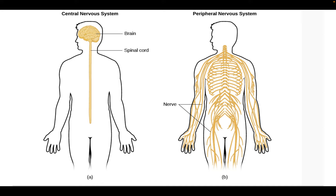The nervous system is separated into two parts. We've got the central nervous system, which includes the brain and the spinal cord, and then the peripheral nervous system, which is all the nerves that travel throughout your body — to every finger, toe, leg, arm, throughout your core, and so on.